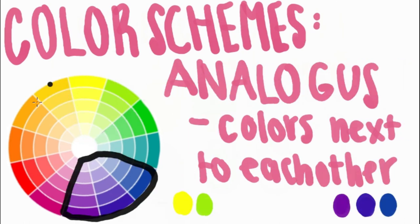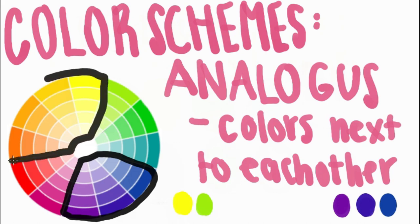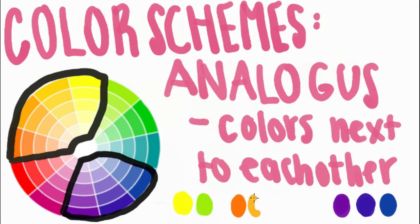The last color scheme is called the analogous color scheme. These are colors that are next to each other on the color wheel. You can use about two to four colors — I wouldn't recommend more than four because then you're just going to use the entire color wheel.